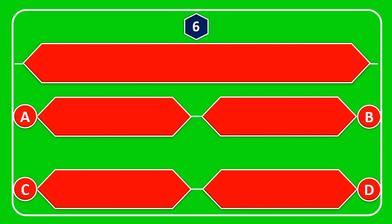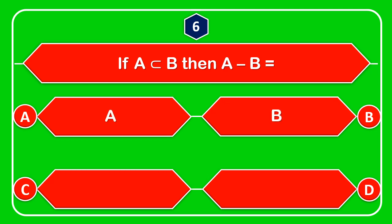Question number 6: If A is a subset of B, then A minus B is equal to — A: A, B: B, C: empty set (Mu), D: Pi.